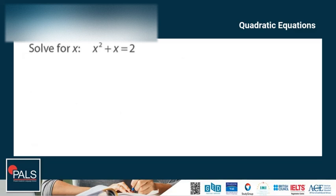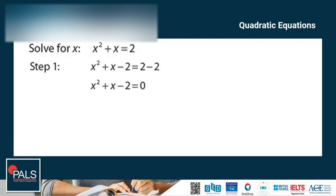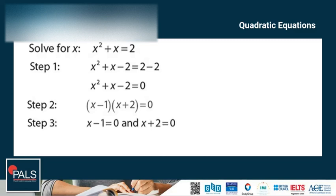Let's try another example. Solve for x: x squared plus x is equal to 2. Step 1: Move all terms to one side — x squared plus x minus 2 is equal to 0. Step 2: Factor the quadratic equation — we get (x minus 1)(x plus 2). Step 3: Set each factor equal to 0: x minus 1 equals 0 and x plus 2 equals 0. Step 4: Solve the two resulting equations — x is equal to 1 and x is equal to negative 2.